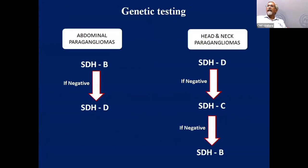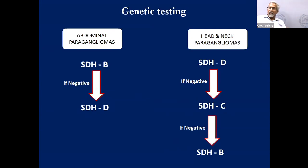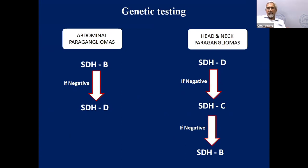For genetic testing, Sanger sequencing requires looking for each gene individually. With next generation sequencing (NGS), you can put all genes together in one panel and make your genetic diagnosis simultaneously. This is the algorithm used when Sanger sequencing is available; with NGS you can look for all mutations simultaneously.